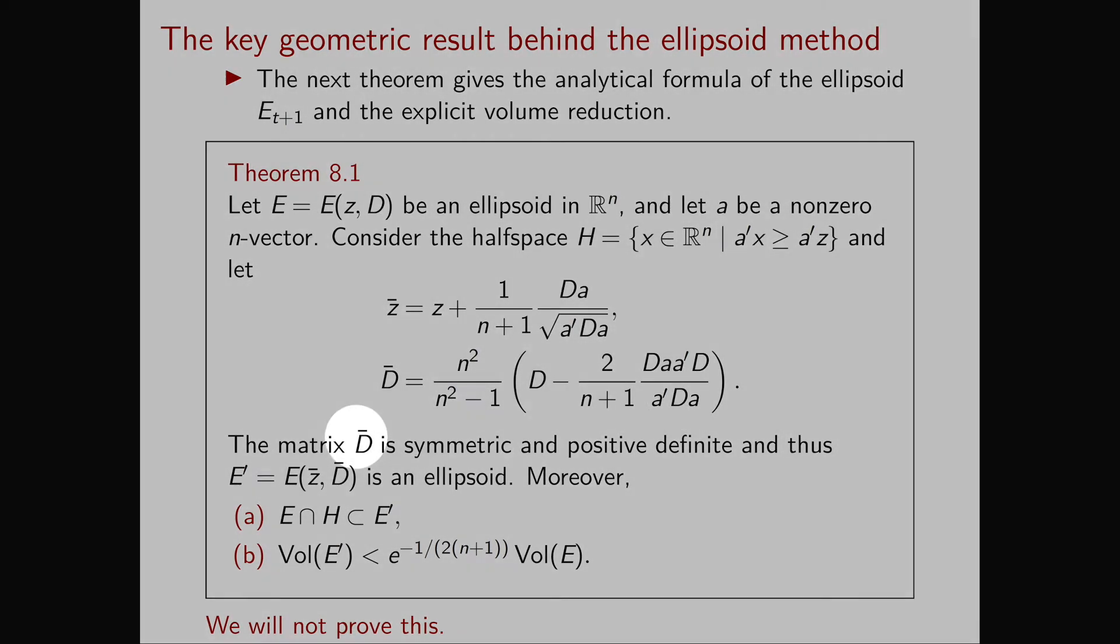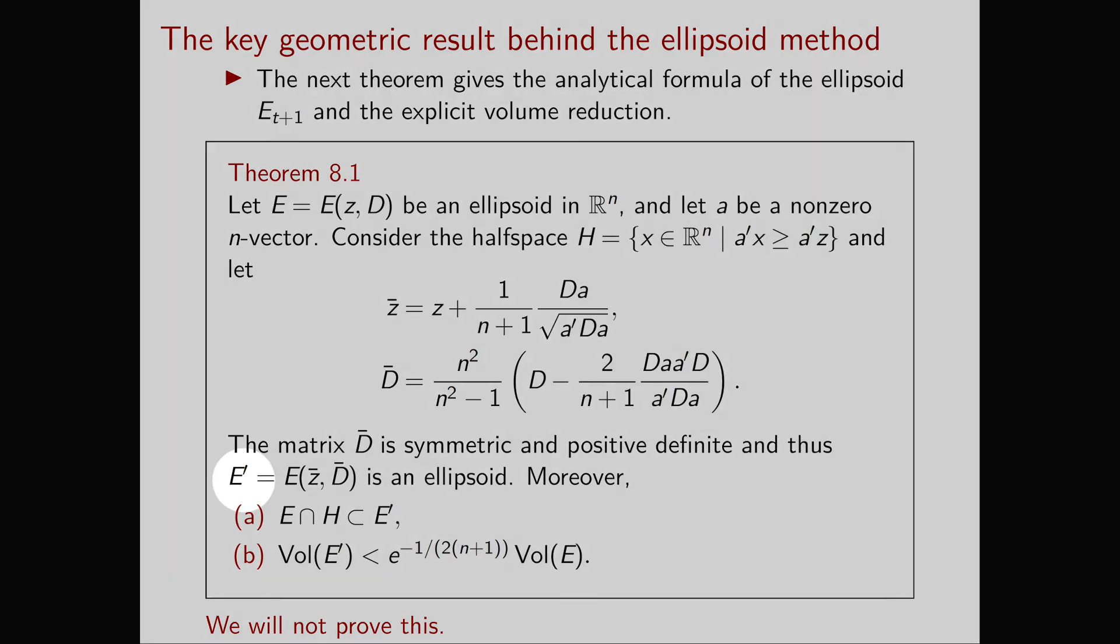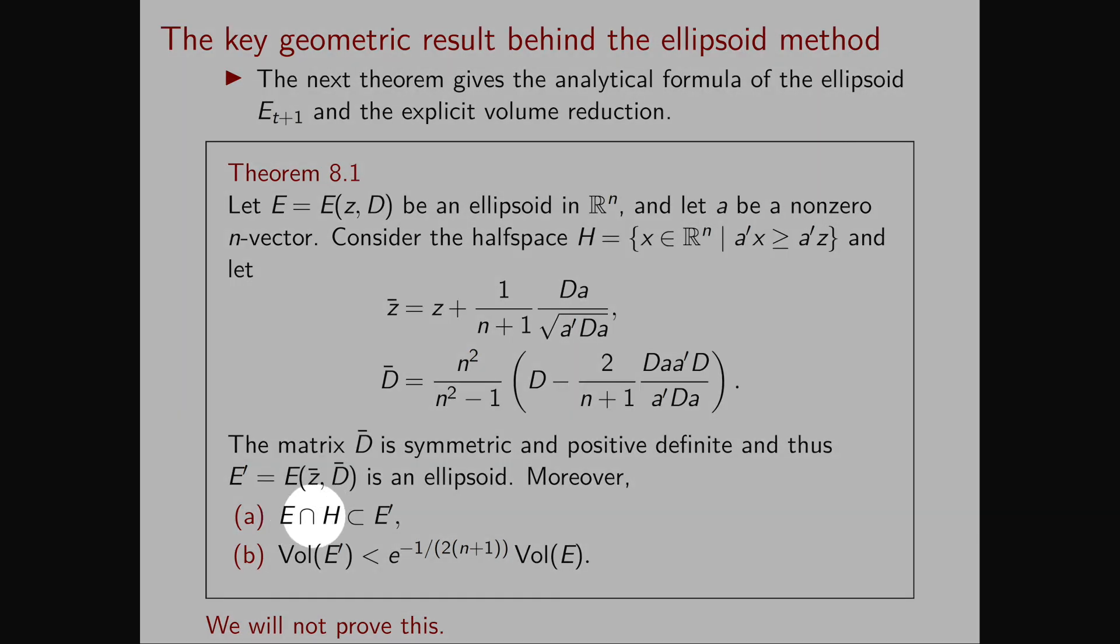Therefore we can consider the ellipsoid E' equal to E(z bar, D bar). E intersected H is contained in E' and the volume of E' is equal to the volume of E times e to the minus 1 over (2n+1). We will not prove this theorem.